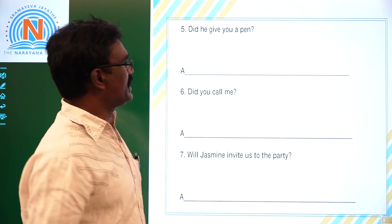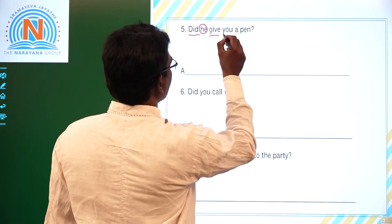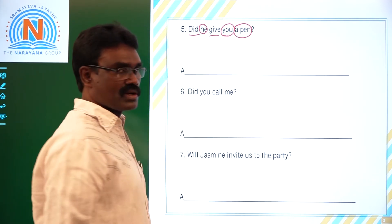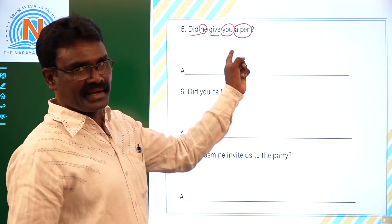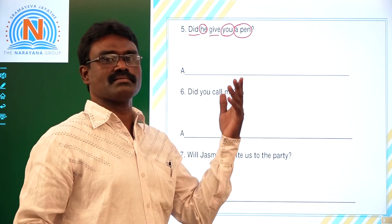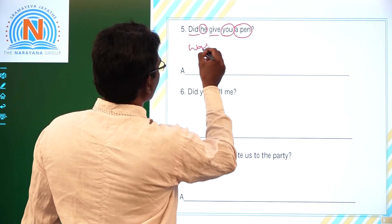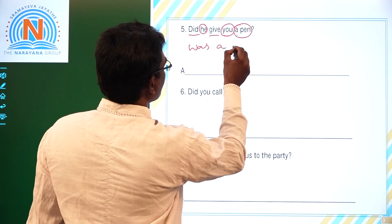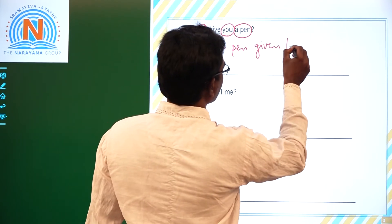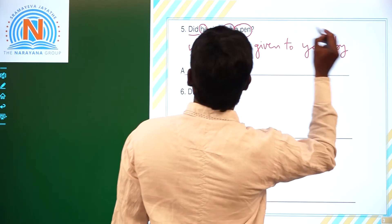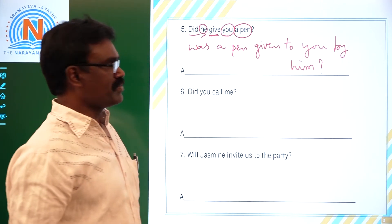Fifth one: 'Did he give you a pen?' 'Did' is the helping verb, 'give' is the main verb, 'he' is the subject. Here there are two objects — 'you' is the indirect object and 'pen' is the direct object. We can make any object the subject. 'Pen' is singular, so we use 'was.' V3 of 'give' is 'given.' Answer: 'Was a pen given to you by him?'